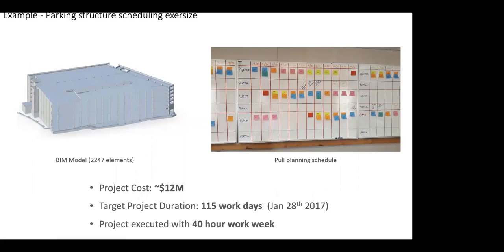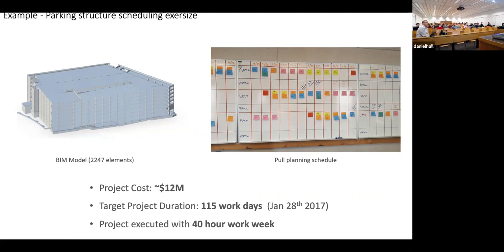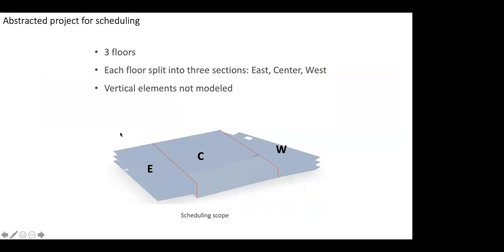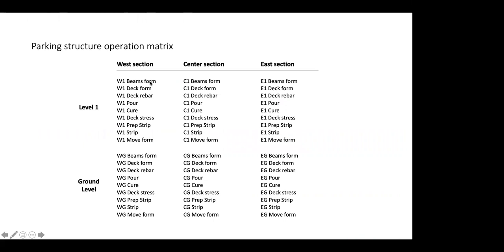Let's take a look at a simple, stupid project — a parking lot. This is the first project we ever ran with this technology. It's so simple that most people get confused at why we're using it as an example. We've got a parking lot: total one million dollars, 115 workday target. It has three floors, split into three sections: east, center, and west. Each of those sections has these tasks: beams formwork, decks formwork, deck steel, pour the concrete, cure the concrete, stress, repair, strip, move the formwork. You repeat these tasks for each of your sections.